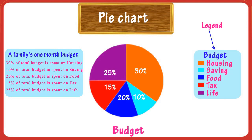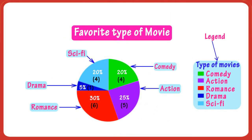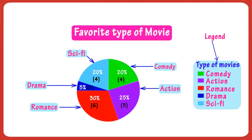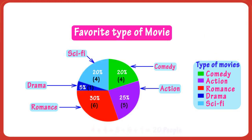A pie chart shows percentage values as a slice of pie. Let's learn it with examples. Here we have a pie chart — let's try to read it. The title says this pie chart shows the favorite movies. This circle is representing 4 plus 4 plus 5 plus 1 plus 6 equals 20 people, and different slices of pie show the people with different choices of movies.